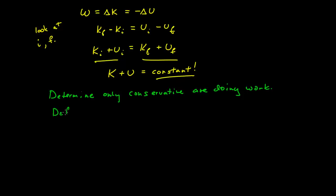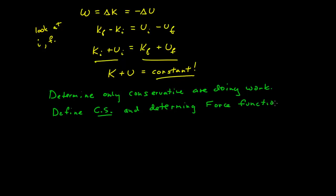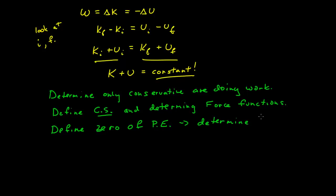Then we have to define a coordinate system, and then determine our force as a function of position given that coordinate system — determine the force functions. Once we have our force functions, we have to define or choose the zero of each potential energy associated with each force: at what position do we want the potential energy to be zero? Once we do that, we can determine the potential energy functions.